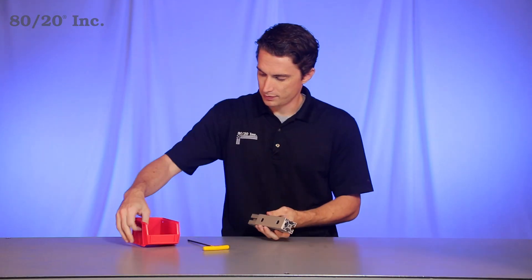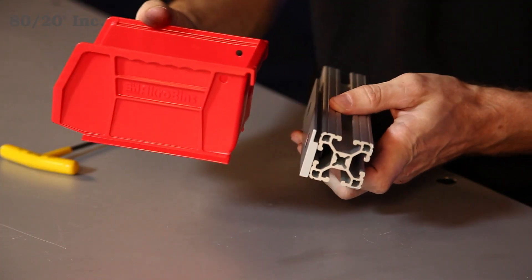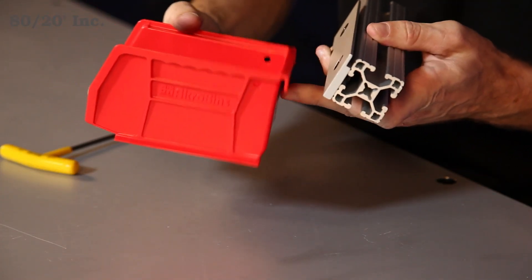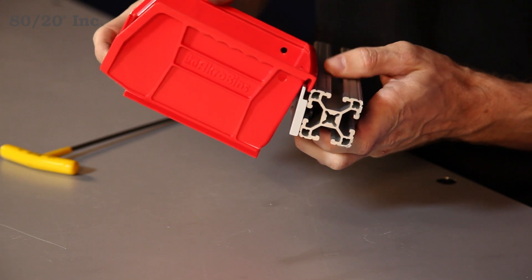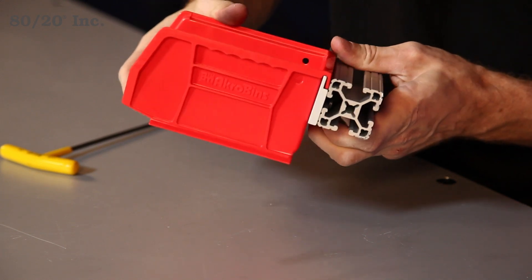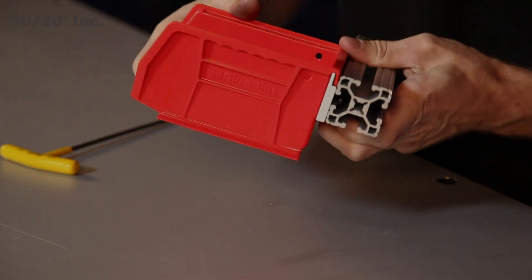Now once you have those tightened down, you'll grab your storage bin, take the hook on the back of the storage bin, and put it right over the hanger, giving it a nice secure connection.